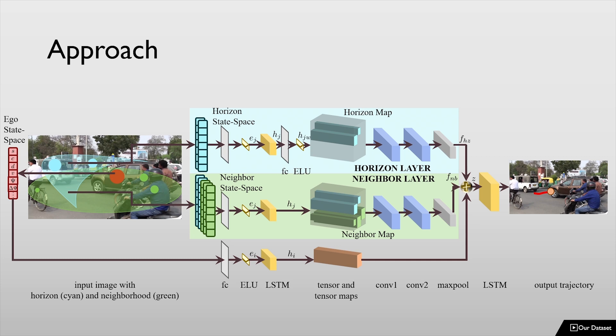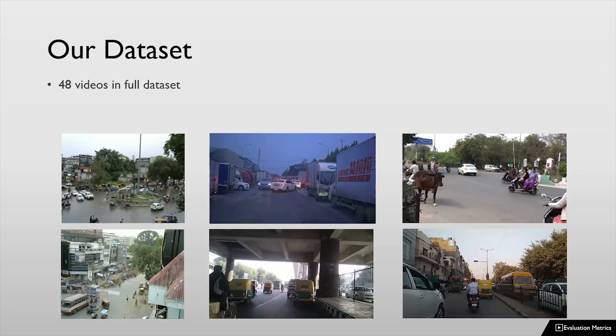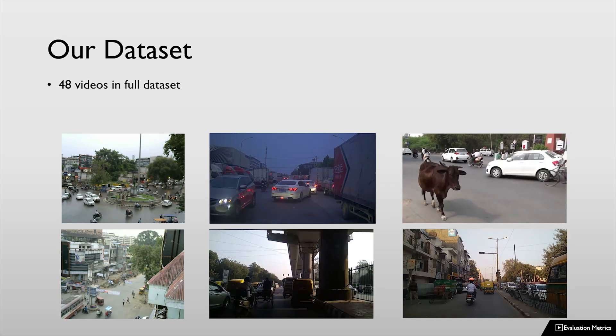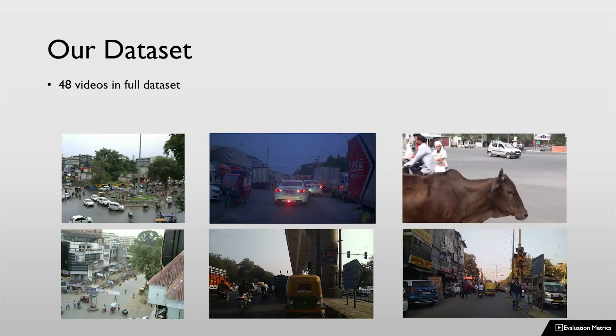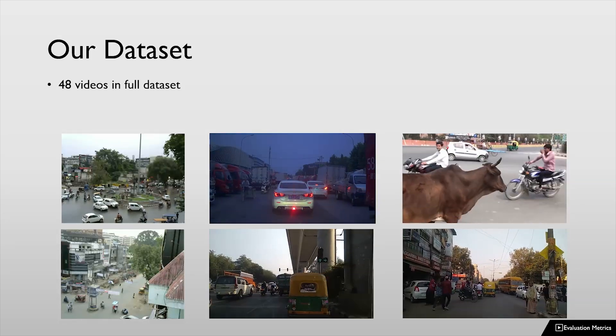We present a new dataset comprising 48 videos of dense and heterogeneous traffic. The dataset consists of various road agents such as cars, buses, trucks, rickshaws, pedestrians, scooters, motorcycles, and domestic animals.